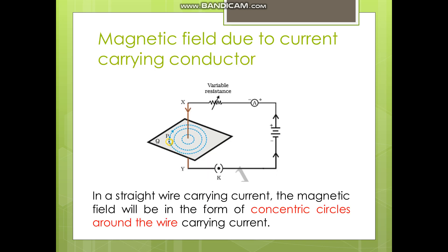Now let us look at the magnetic field due to a current-carrying conductor, specifically a straight conductor. From the diagram, we can say that in a straight wire carrying current, the magnetic field lines will be in the form of concentric circles around the wire carrying current.